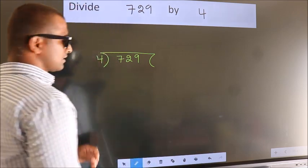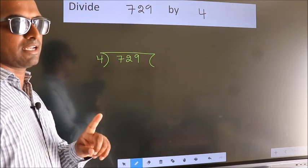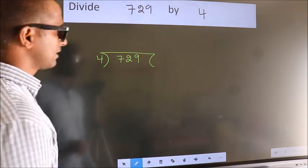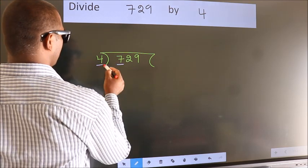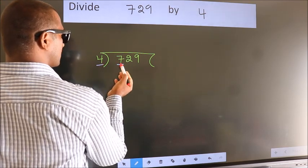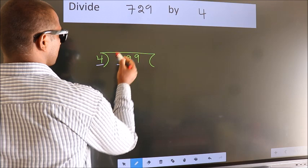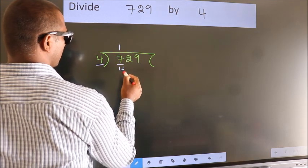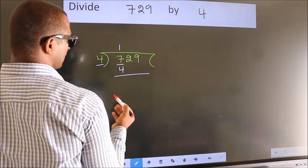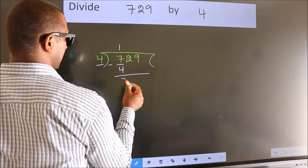This is your step 1. Next, here we have 7, here 4. A number close to 7 in 4 table is 4 once 4. Now we should subtract. We get 3.